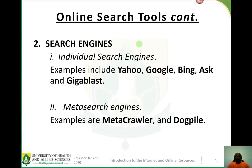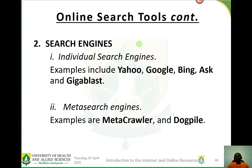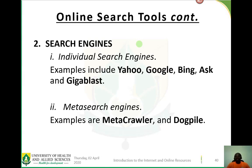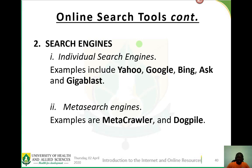Quite opposite to subject directories are search engines. Search engines, unlike subject directories, are not compiled by human beings — they are software programs, usually called web bots or robots in software form. These are programs run by sites to enable automatic indexing of web pages. Examples include Google, Bing, Yandex, and Ask. There is also a broad division: individual search engines — the most common ones we use — and meta search engines.